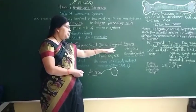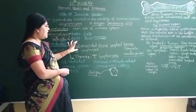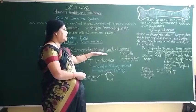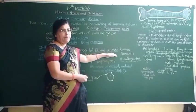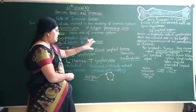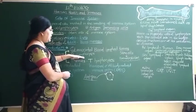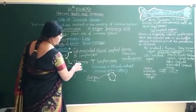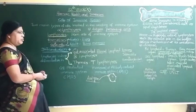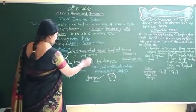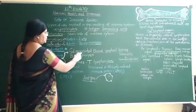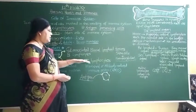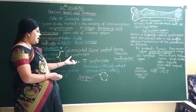The gut-associated bursal lymphoid tissue is where B lymphocytes differentiate. There are two types of lymphocytes: B lymphocytes and T lymphocytes. Lymphocytes which undergo differentiation in the gut-associated bursal lymphoid tissue are called B lymphocytes, and lymphocytes which get differentiated in the thymus are called T lymphocytes. The thymus is a gland located at the back of the heart.